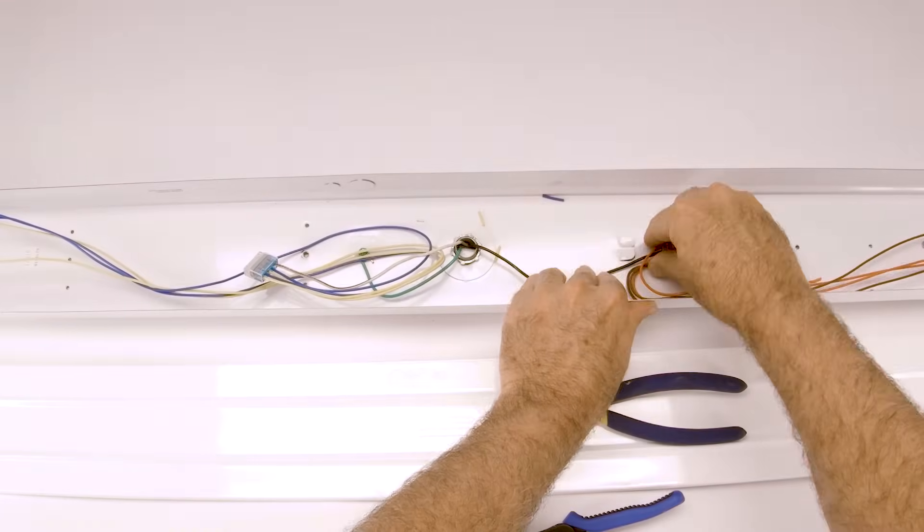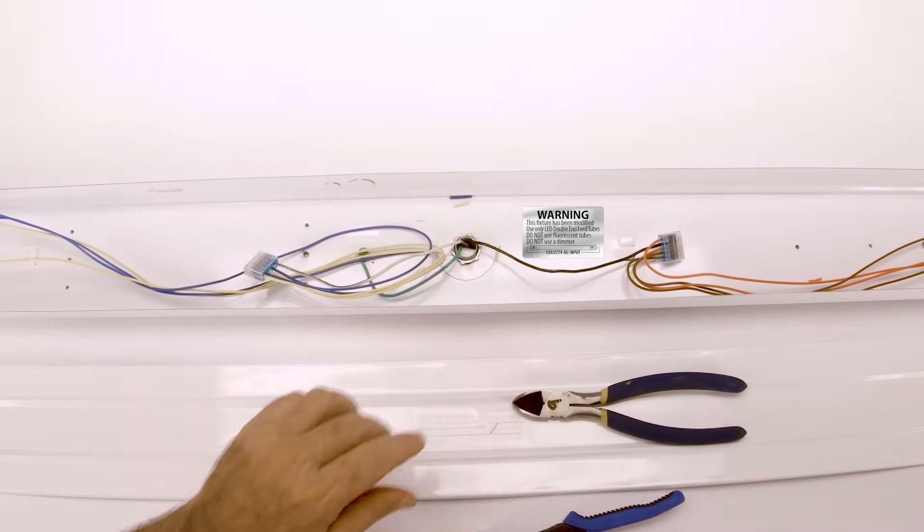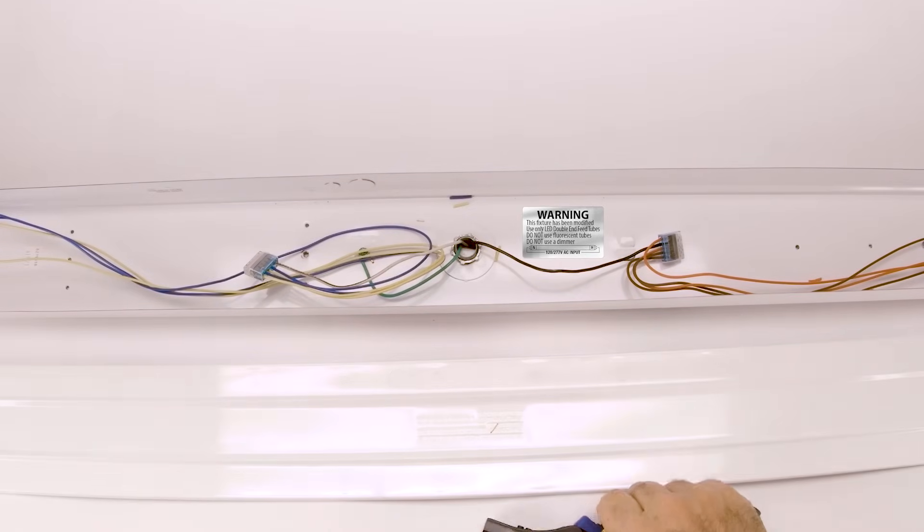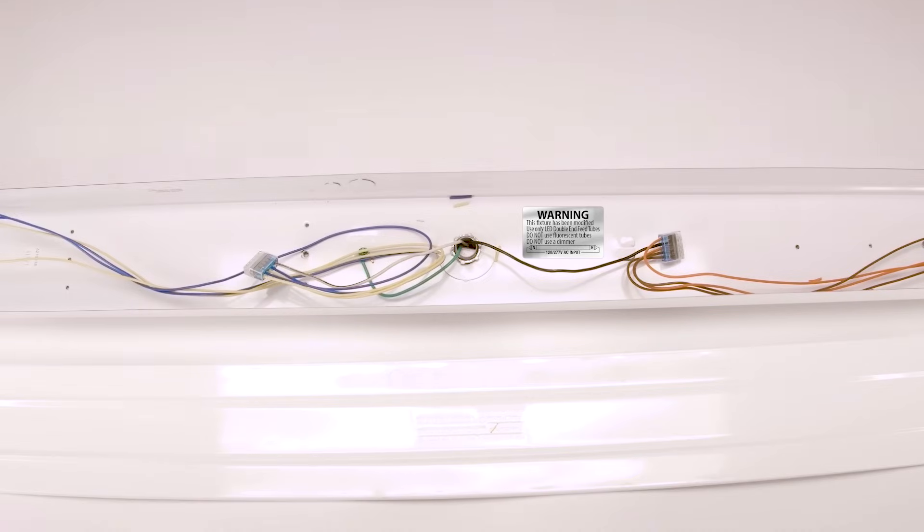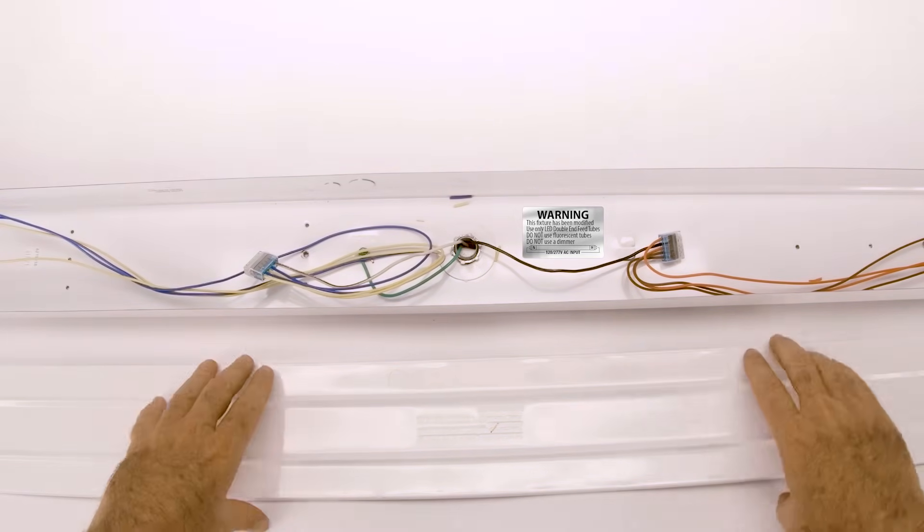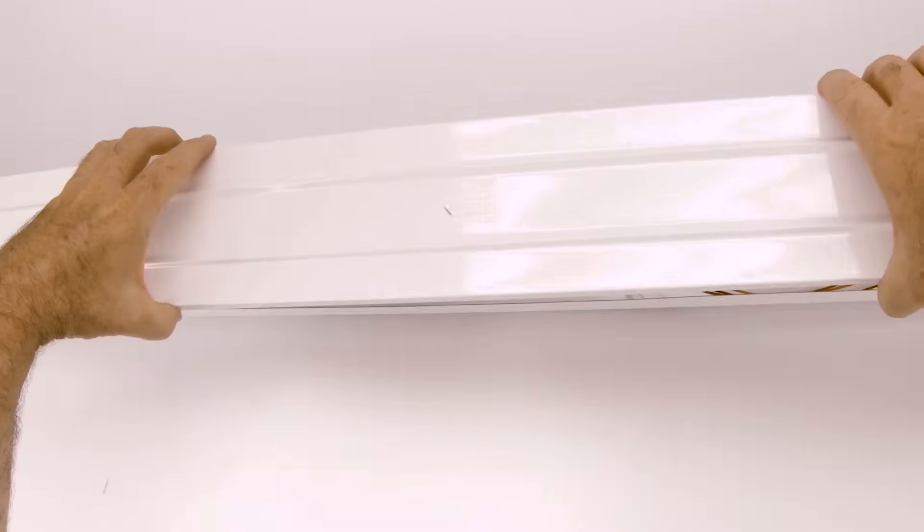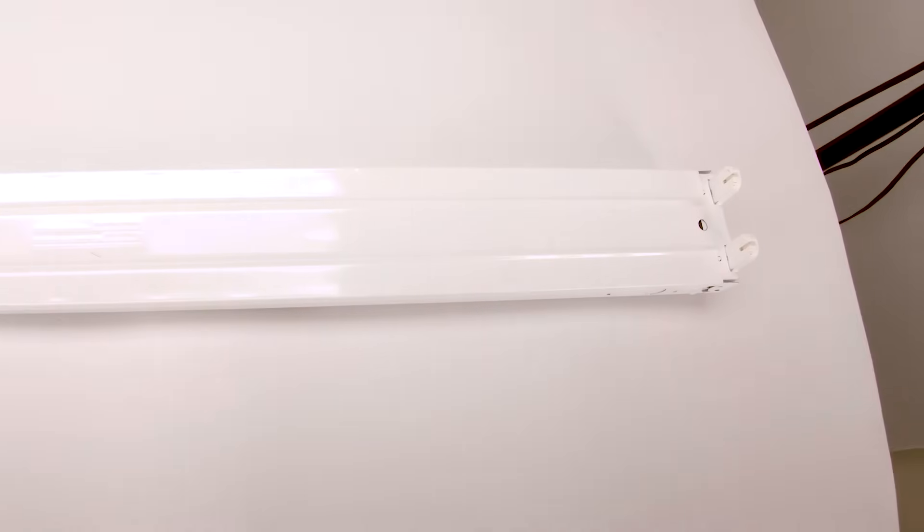So this light fixture has been converted. Make sure you put in your label that we supply with each and every kit to let people know in the future that it has been converted. However, it is somewhat obvious being the fact that there isn't any ballast in the middle of the light fixture anymore. Put your cover back on the light fixture basically the same way you just took it off. Don't forget to put the little clip in the end.